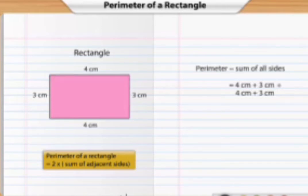So children, the perimeter of a rectangle formula is 2 times the sum of adjacent sides. That means 2 times the opposite sides. We have length and breadth. So 2 times length plus breadth.